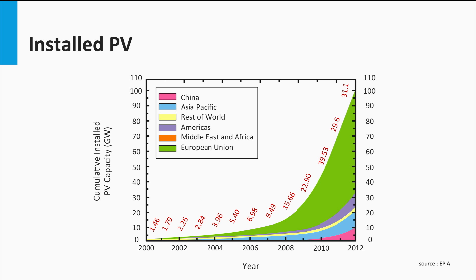The next graph shows the worldwide cumulative installed PV power, which is exponentially increasing in time as well. The different colors reflect the different regions in the world. The green area corresponds to Europe, which shows that the far majority of PV systems are installed in Europe.